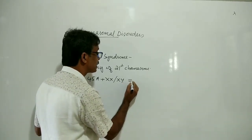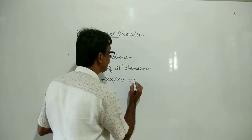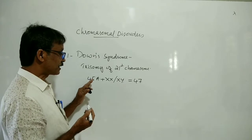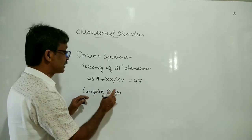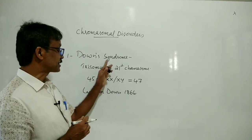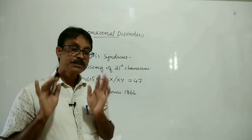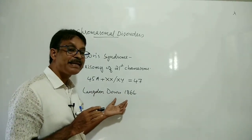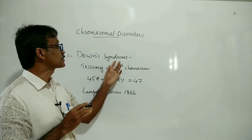So totally their chromosome number is 47 instead of 46. This disorder was first described by Langdon Down, and so this disorder is named Down syndrome. Due to this additional chromosome, they have many disorders, and such a group of disorders is called a syndrome.